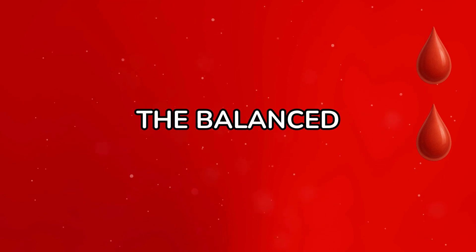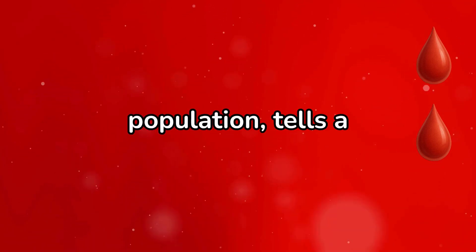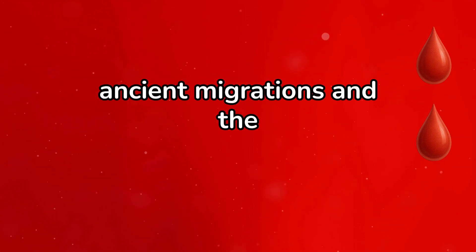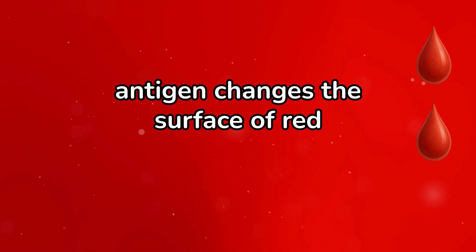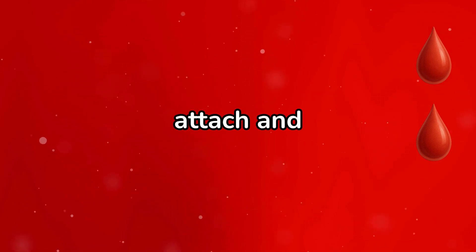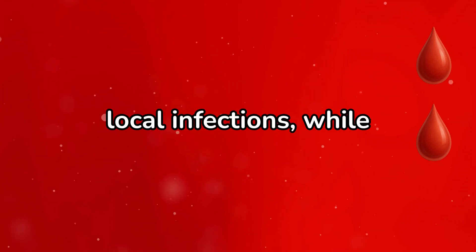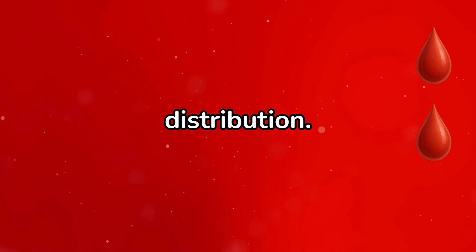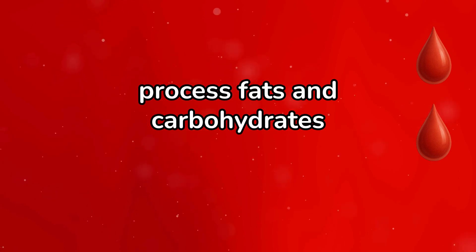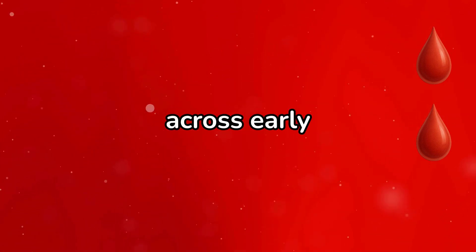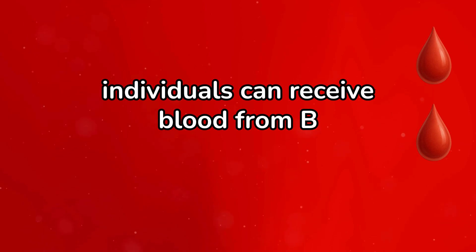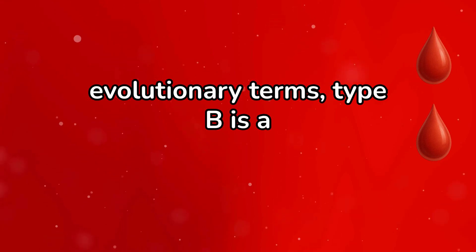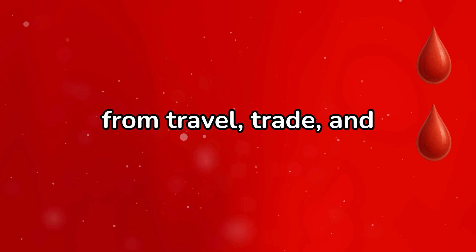B positive, the balanced nomad. B positive blood, found in about 10% of the population, tells a story of movement and diversity. This type is especially common in parts of Asia and the Middle East, less so in the West — a clue to ancient migrations and the selective pressures of geography. The B antigen changes the surface of red blood cells in ways that affect how pathogens attach and invade. In some regions this provided resistance to local infections, while in others it offered no advantage at all. Over thousands of years, this uneven survival pressure sculpted its global distribution. Metabolically, some studies suggest B carriers process fats and carbohydrates differently, reflecting adaptations to varied diets across early civilizations. In medicine, B positive individuals can receive blood from B and O donors — not as universal as O types, but flexible enough to avoid scarcity in most populations. In evolutionary terms, type B is a biological record of the nomadic era: an antigen born from travel, trade, and genetic exchange across continents.